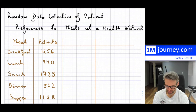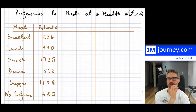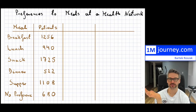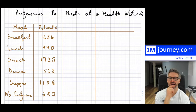The preferences are breakfast, lunch, snack, dinner, supper, or no preference at all. Using whichever sampling technique I have used, I found that 1,256 patients prefer breakfast, 940 prefer lunch, 1,725 prefer snack, and so on.